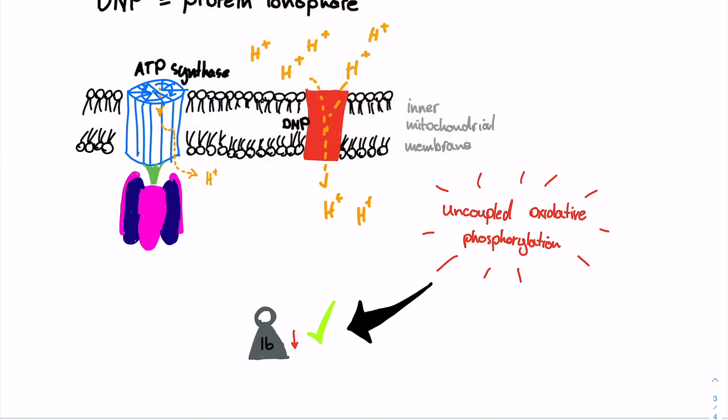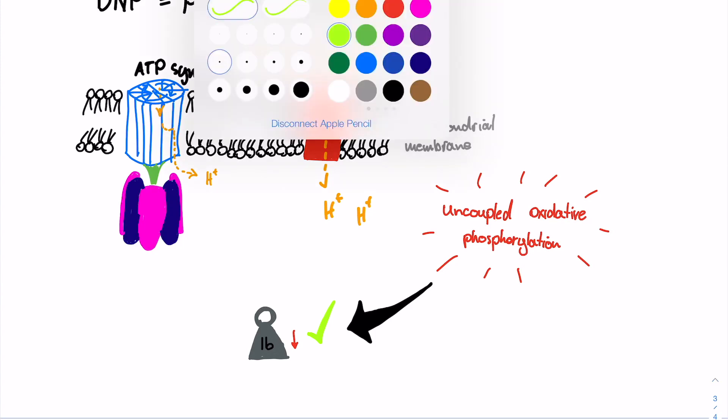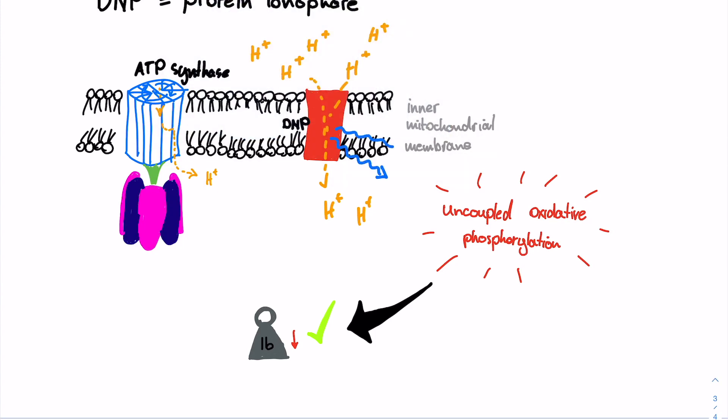However, this of course comes at a very dangerous cost, one that John is now paying. So here's the actual problem that's putting John at risk, and that is that the protons flowing from the transmembrane space to the mitochondrial matrix now release waste energy in the form of heat, which results in hyperthermia that he was experiencing.